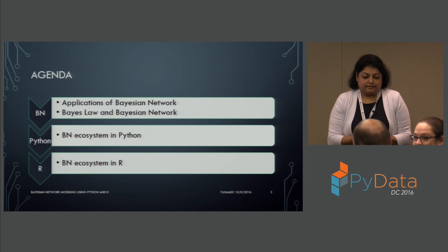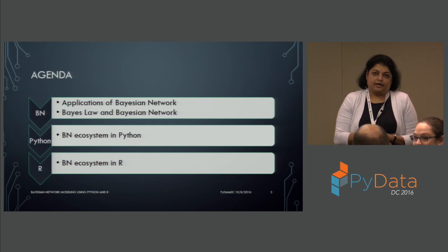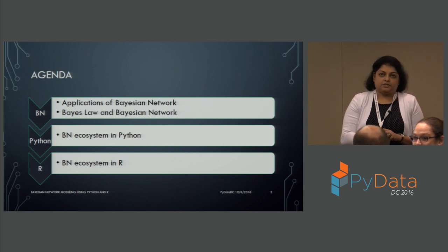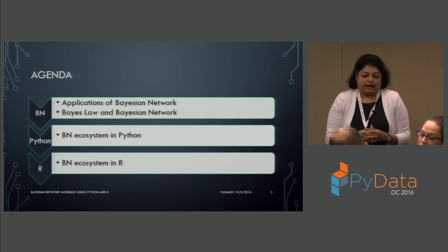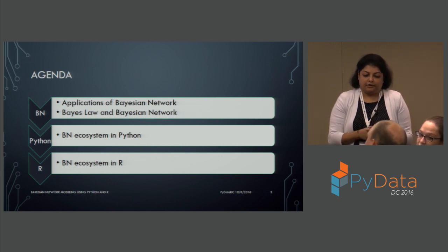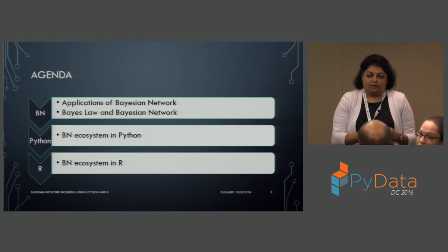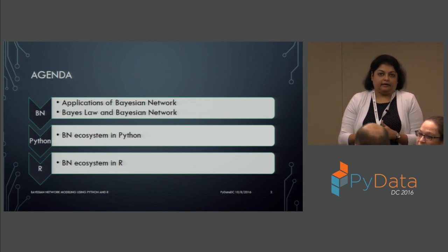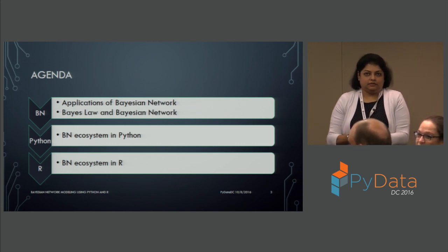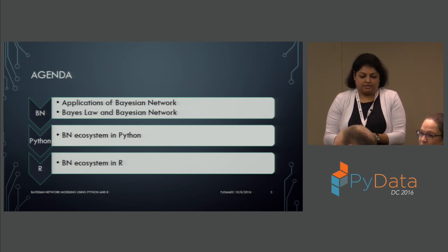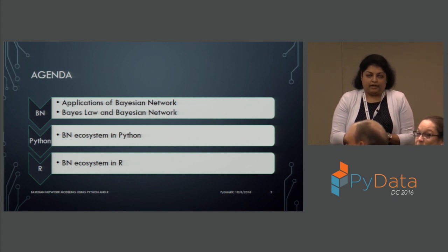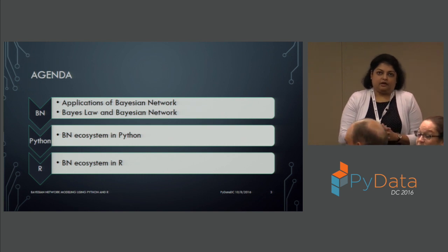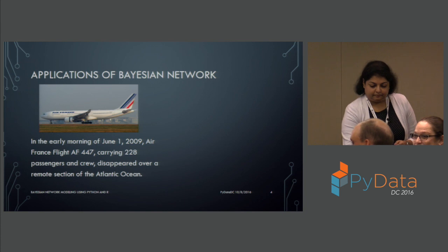Let's look at the agenda. The agenda involves looking at the applications of Bayesian network and how it was derived from Bayes' law and the theories of Bayesian network. We'll follow that with an understanding of the BN ecosystem in both Python and R.